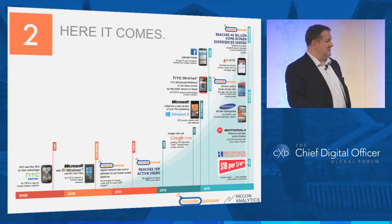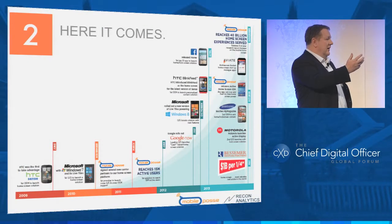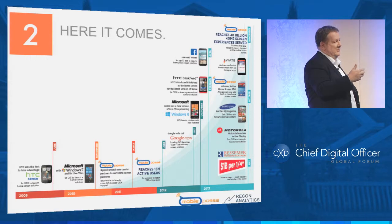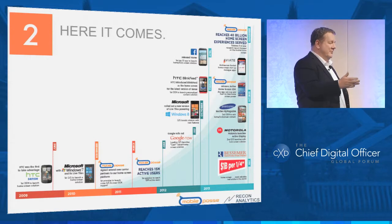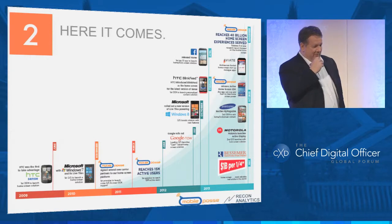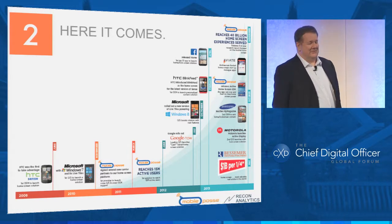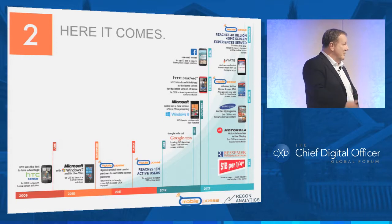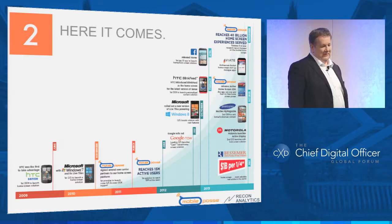Shortly thereafter, Microsoft came out with Windows Phone 7 and Active Tiles — really a new way for the consumer to engage as well. I would say Windows for phone is like the best operating system nobody's using, but it is a really, really innovative scenario.